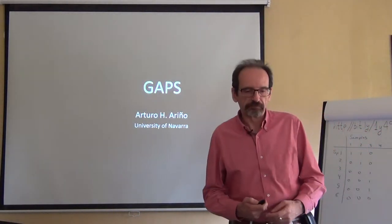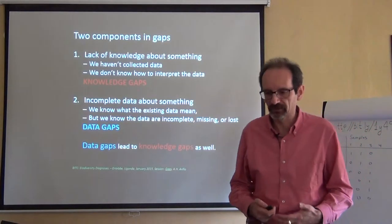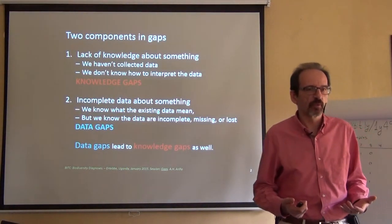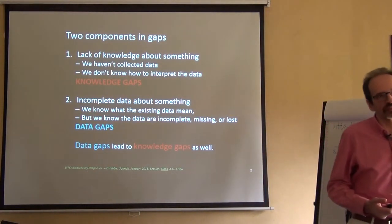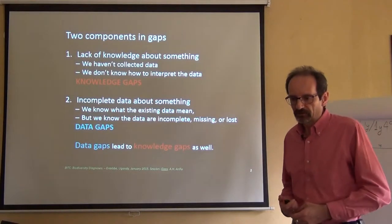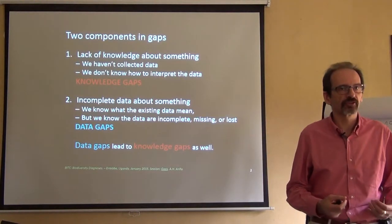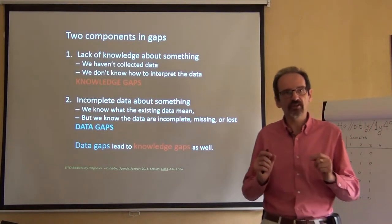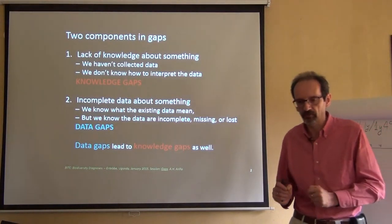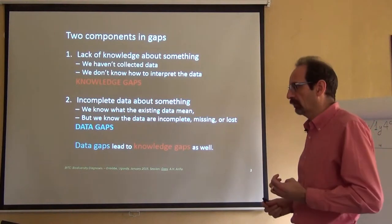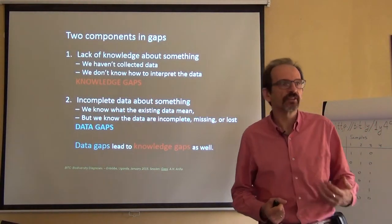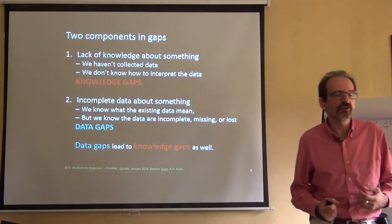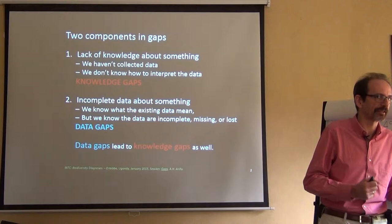A gap has basically two different components. A gap is a lack of knowledge. We lack knowledge about something because we haven't collected data — they are not there — or we have the data but we don't know how to interpret them. So the gap in this case is that we don't have the necessary knowledge about something. But there is a second specific gap, which is normally part of the first gap — part of the knowledge gap — which is the data gap. We might know what the data mean, but we know that those data are not enough for a good interpretation. A data gap means that we know where we want to go, we know what we want to have, but we don't have it. We lack data.